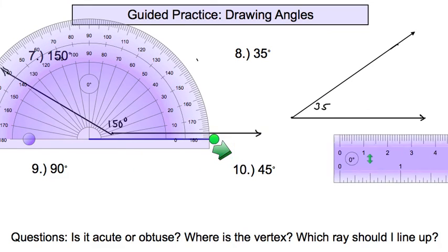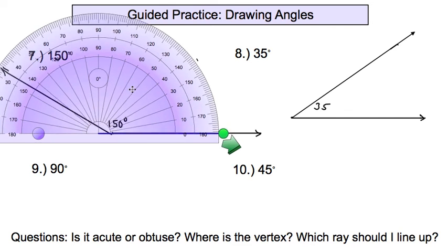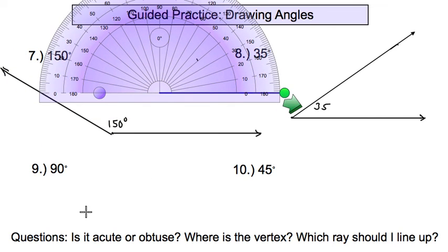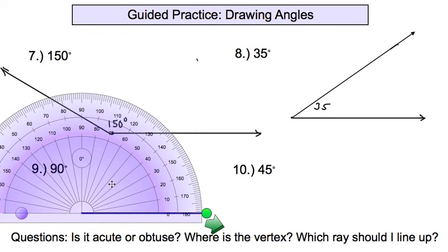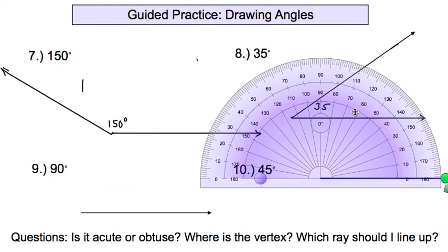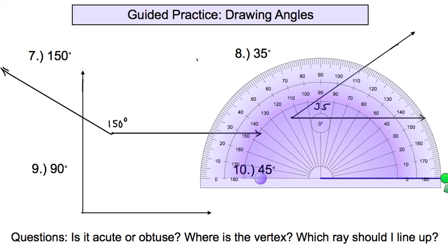To draw a 90-degree angle, first draw a straight line with an arrow on it. Then using the protractor, put the vertex in the hole and line up with the zero, then make a line that connects the 90-degree mark. Draw another ray from the vertex going right through that line you just drew. Label it as a 90-degree angle.